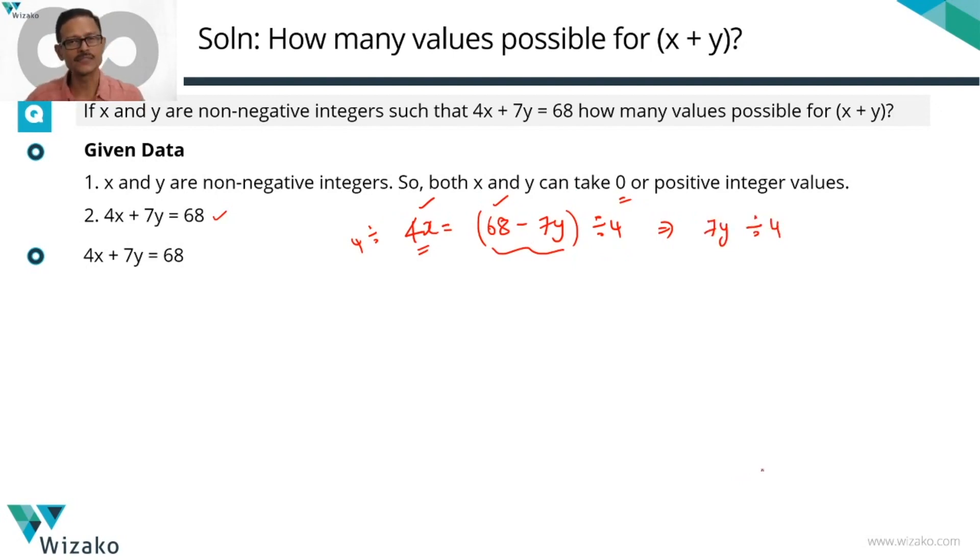y is an integer. 7 is not divisible by 4. y is an integer. 7 is not divisible by 4. 7y is divisible by 4. Then we can infer that y should be a number that's divisible by 4.